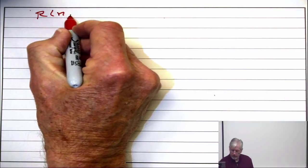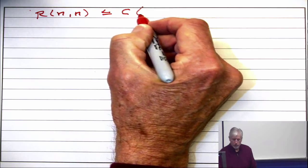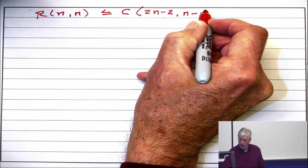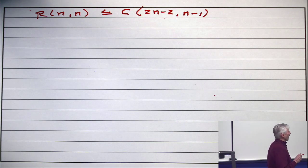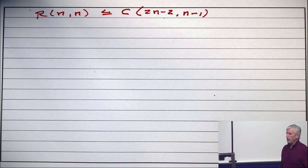That's the easier of the two, because we know that R(n,n) is less than or equal to the binomial coefficient 2n minus 2 choose n minus 1. M plus n minus 2 choose m minus 1, but if they're symmetric, you've got that.